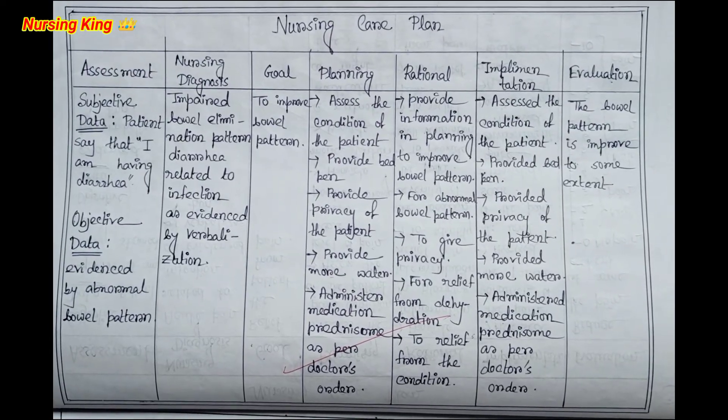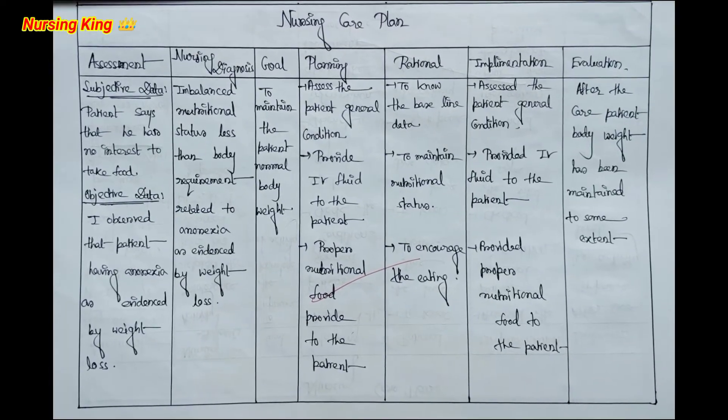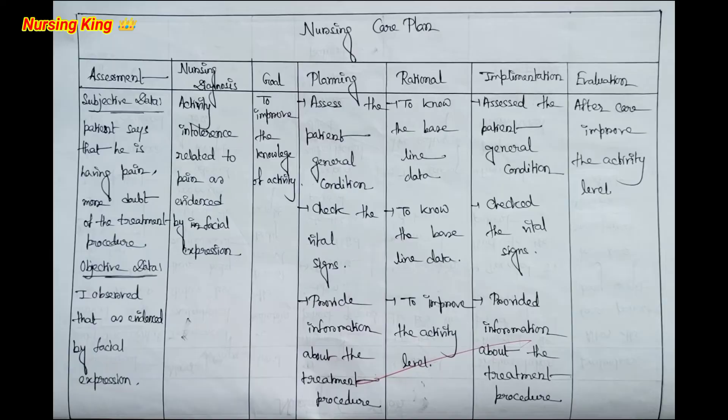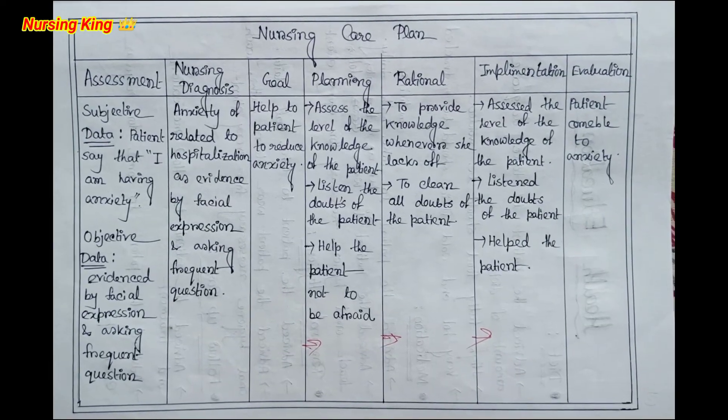Four or five nursing care plans have to be mentioned. In each care plan, include assessment, diagnosis, goal, planning, implementation, and evaluation. Rationale you can mention, otherwise you can skip it if you don't want to. It's okay.